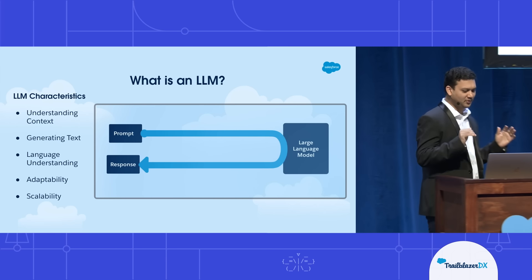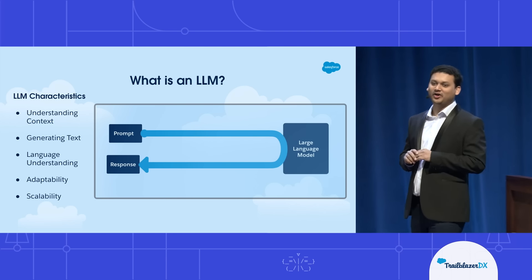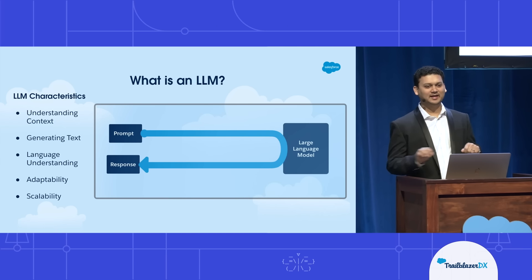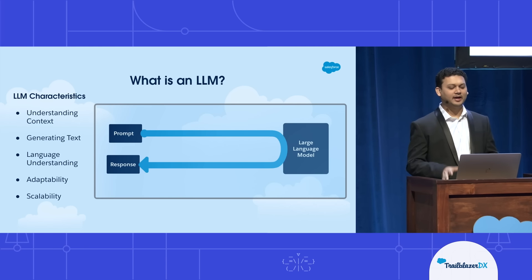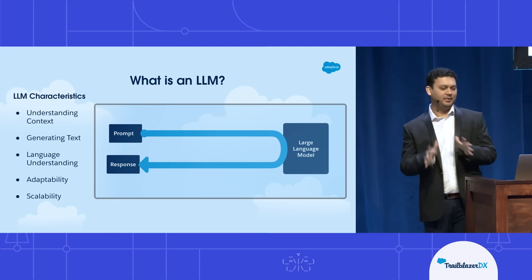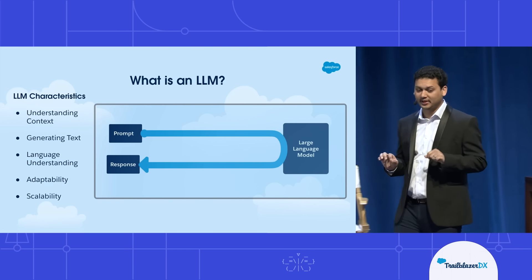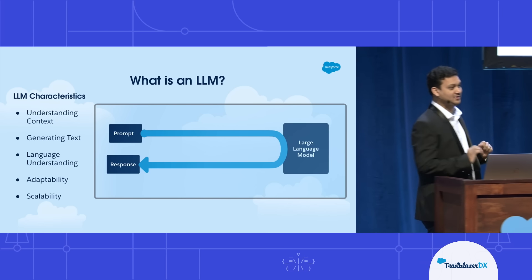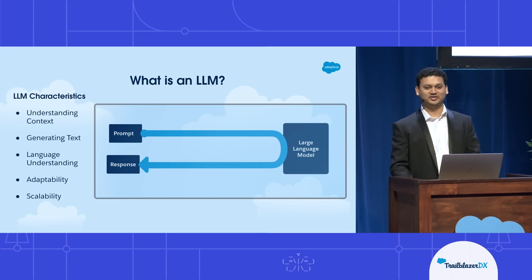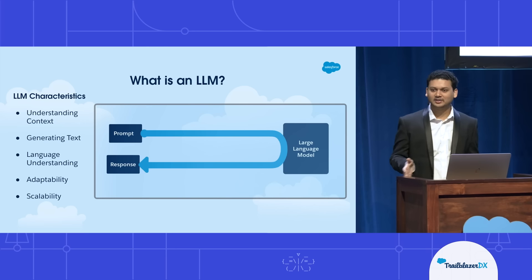The biggest transformational technology for the last couple of years has been LLMs, or large language models. It's very important for us to understand why these LLMs are powerful and how we can tailor them for our needs and make them secure for enterprise use cases. A fundamental characteristic of LLMs is that they can understand context — you can chat with them, and they understand the previous conversation, giving meaningful responses.